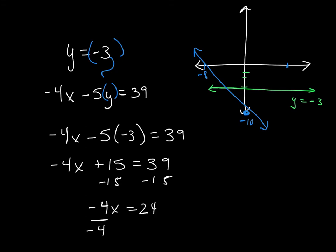Divide both sides by a negative 4. And you are left with x is equal to a negative 6. So the ordered pair solution, and you must write your answer as an ordered pair, is negative 6, negative 3.